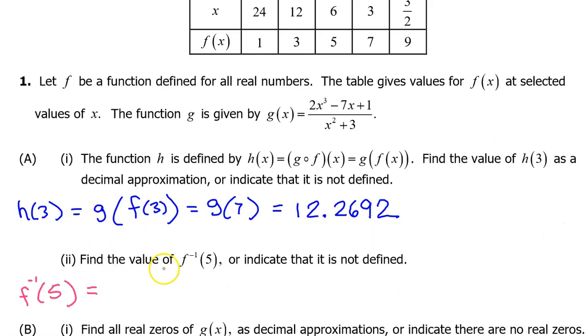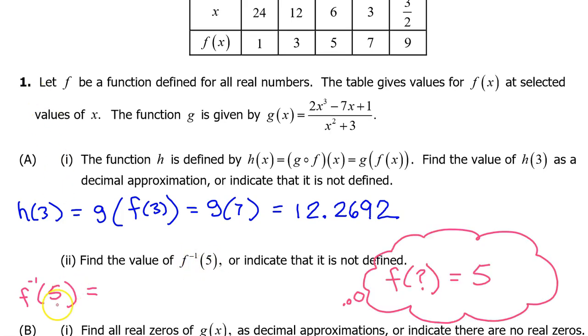Part A.2: Find the value of f inverse at 5. To evaluate f inverse at 5, ask yourself, f at what is equal to 5? Looking at the chart, we see that f at 6 is 5. So f inverse at 5 is equal to 6.